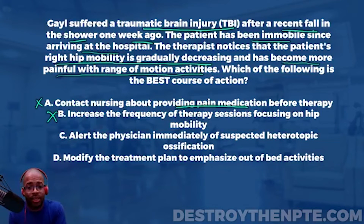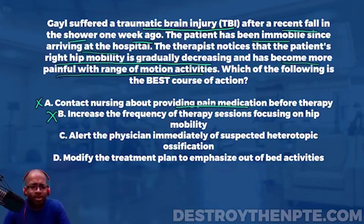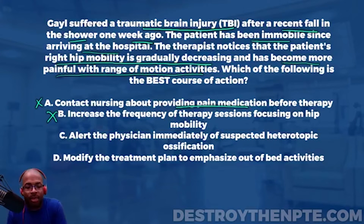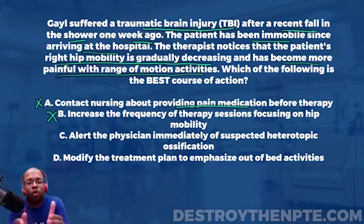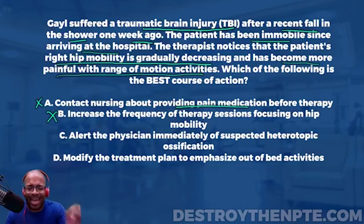Pain with range of motion is also consistent with heterotopic ossification — everything is pointing to it. One valid point raised is that HO usually appears on CT scans at four to six weeks, but the onset can vary by patient. The key takeaway is: if there is ever a suspicion of heterotopic ossification — whether initial stages or further along — it is your PT duty to report it directly to the physician immediately. That's the protocol. I really like this answer — it's the best one so far.